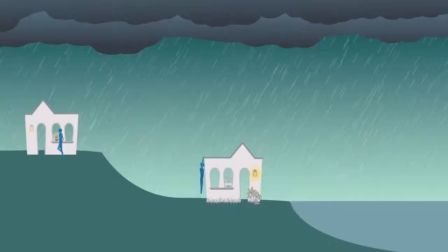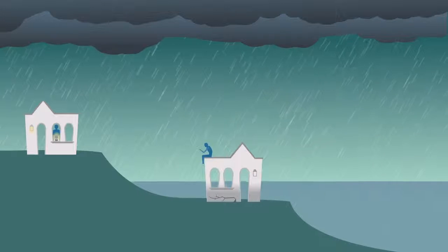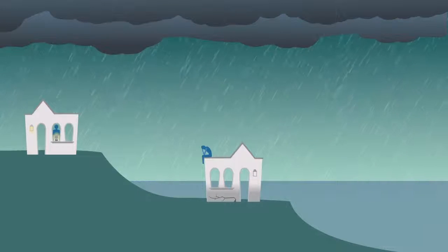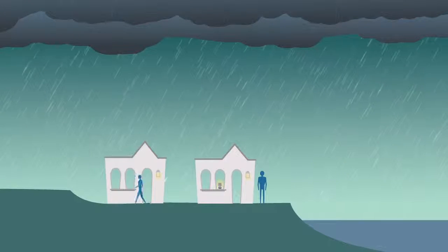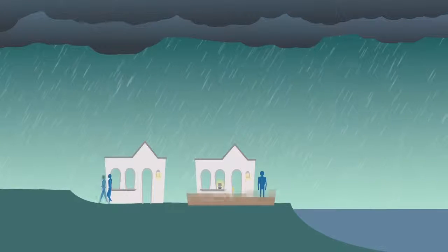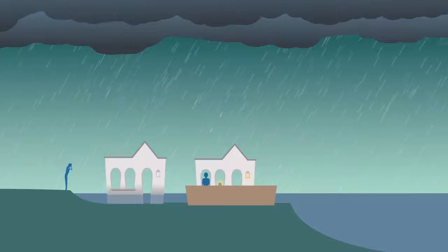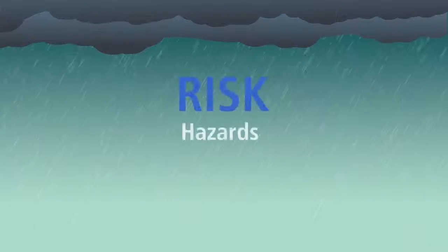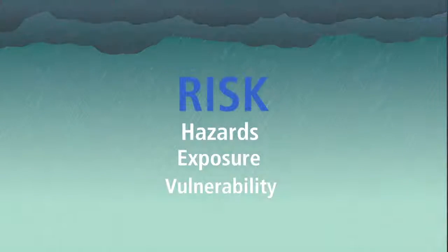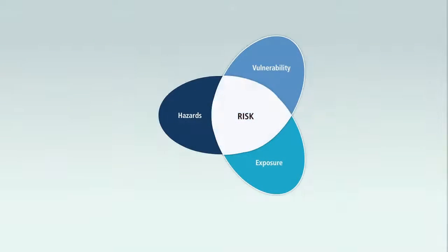Exposure is people, ecosystems, or assets at risk. Finally, vulnerability is susceptibility to harm or limited ability to cope and adapt. Risk of climate change impacts emerge from the interaction of hazards, exposure, and vulnerability.